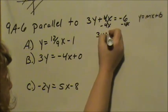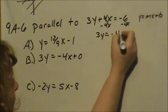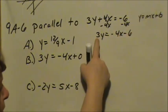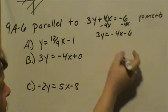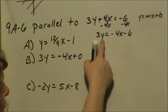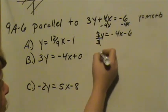Then we have 3y equals, we cannot combine x's and whole numbers, so we have negative 4x minus 6. We cannot leave that 3 there. We want y all by itself. This is being multiplied. 3y implies being multiplied, so it has to be divided in order for that to go away.